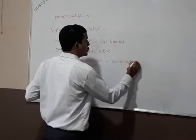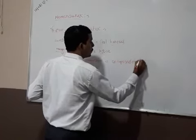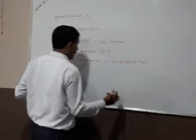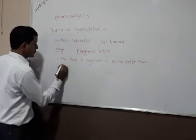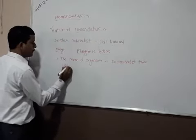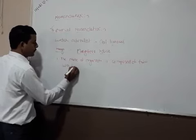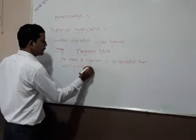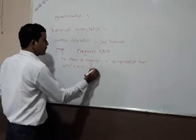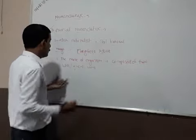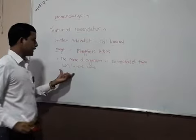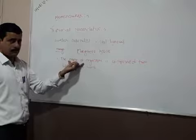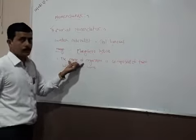Let's conclude. Binomial nomenclature consists of two Latin words or two Greek words. Two Greek words and two Latin words are ready for this organization.